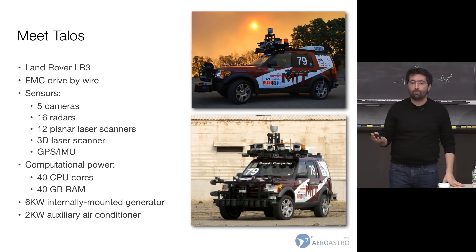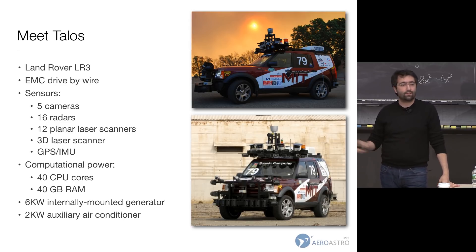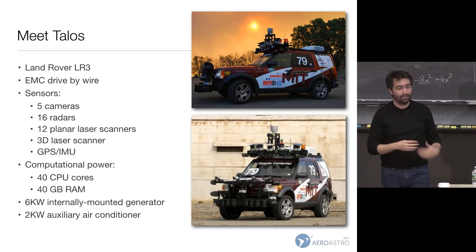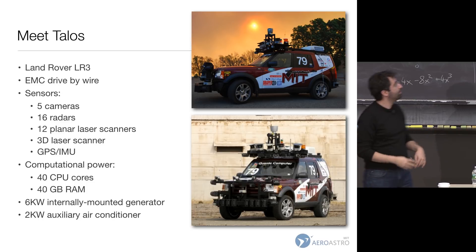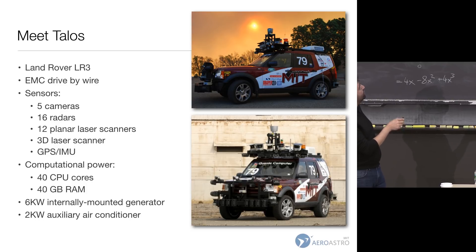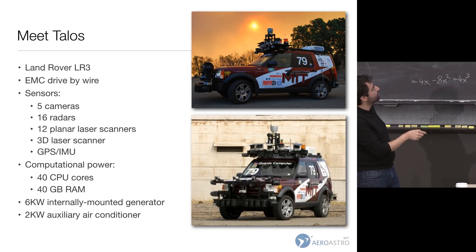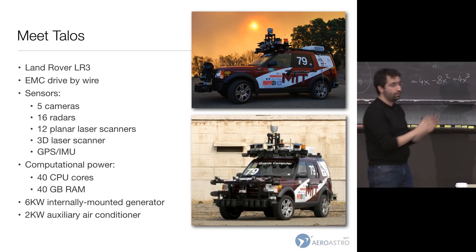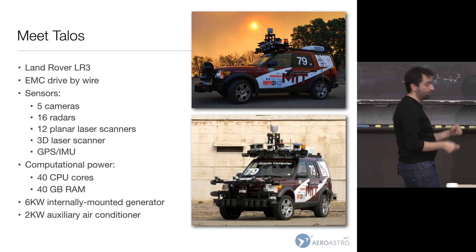We used to joke that this was the fastest mobile computer on campus — both in terms of speed and compute power. This required a lot of energy, so we put on an internally mounted generator. That generates a lot of heat, so we put an air conditioner on top. That became our vehicle.